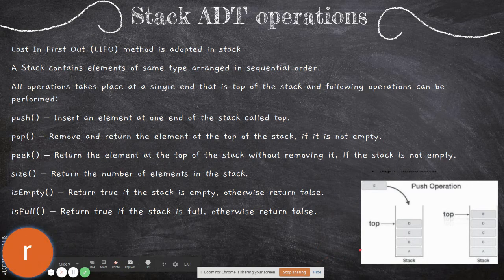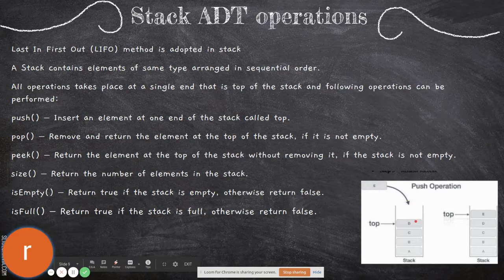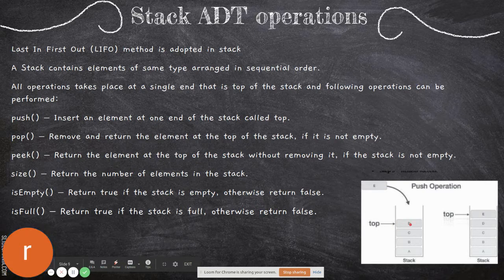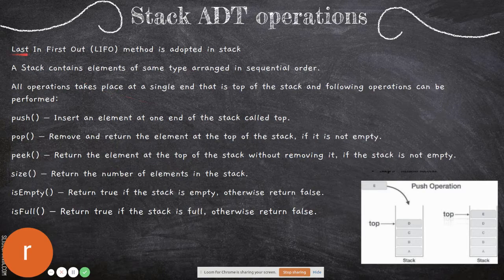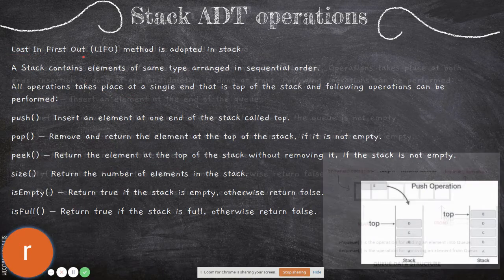So if I have to remove B, I have to remove D first, then C, then I will reach B and then I can remove B. This is how the stack works — the last in, which is D, will be removed as the first one. That is why the name Last In First Out.